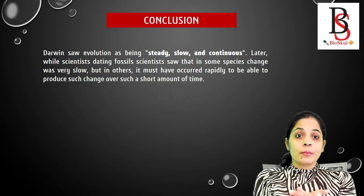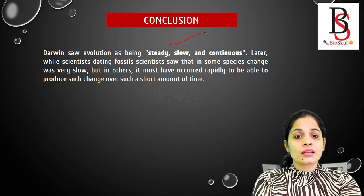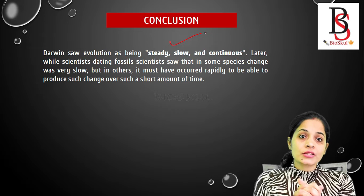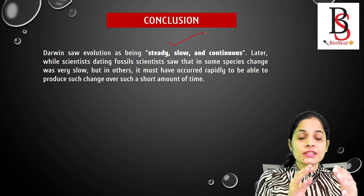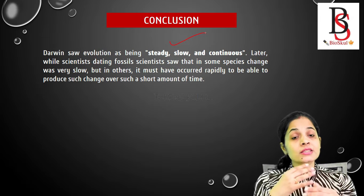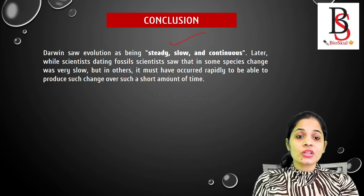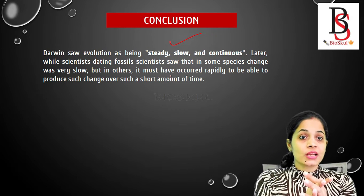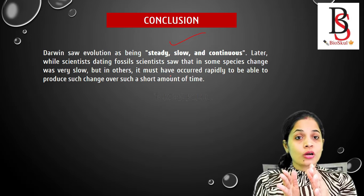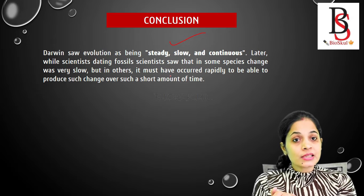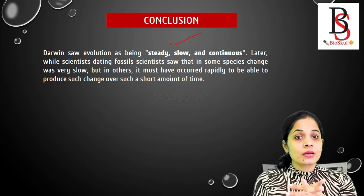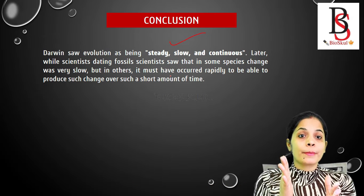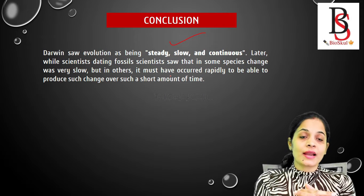According to Darwin, the rate of evolution is steady, slow, and continuous — meaning evolution occurs gradually. Later, when scientists studied fossils, they found that in some species changes were slow, but in other species changes were very rapid within a short period of time with no connecting link between them. From that study it was concluded that evolution does not occur only gradually but also takes place rapidly by punctuated equilibrium. So there are two types: gradual equilibrium and punctuated equilibrium.